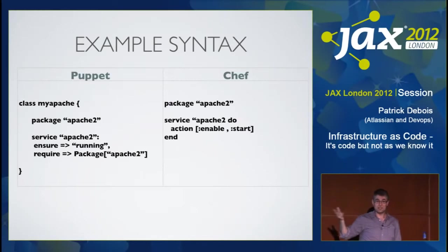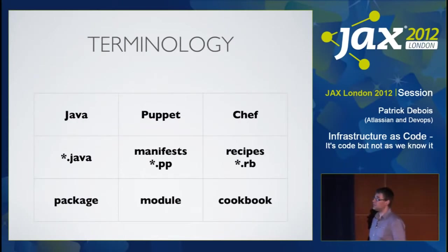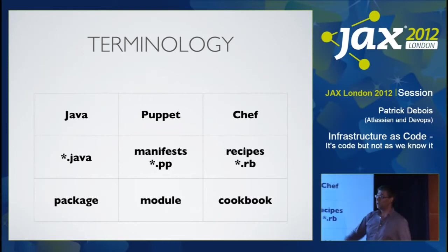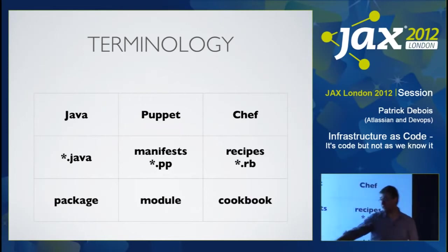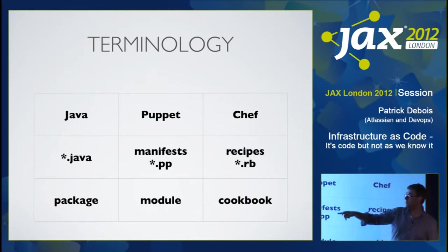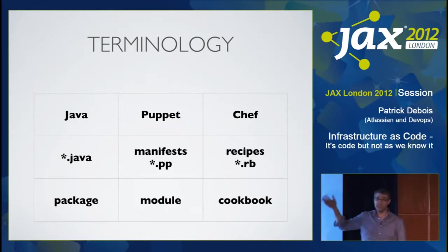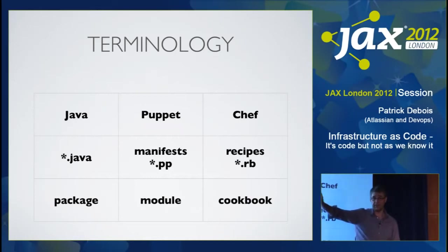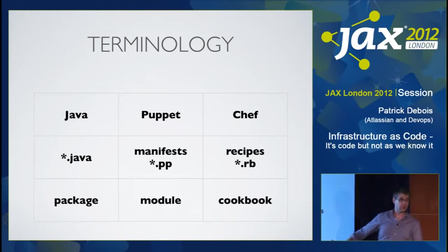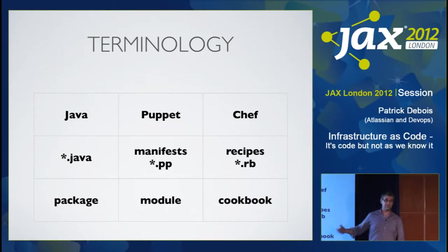If you're a developer by background, I often see people start with Chef because it gives you the Ruby syntax and all the constructs you're used to in your language, but it has a mixed-in DSL that will make that abstraction for you. The two systems have their own terminology. In Puppet you have manifests with .pp extension — just text files where you put your code. In Chef you have Ruby .rb but mixed with Chef recipes. If you bundle classes together, like Apache and other parts, you bundle them into a module in Puppet, and in Chef into a cookbook.